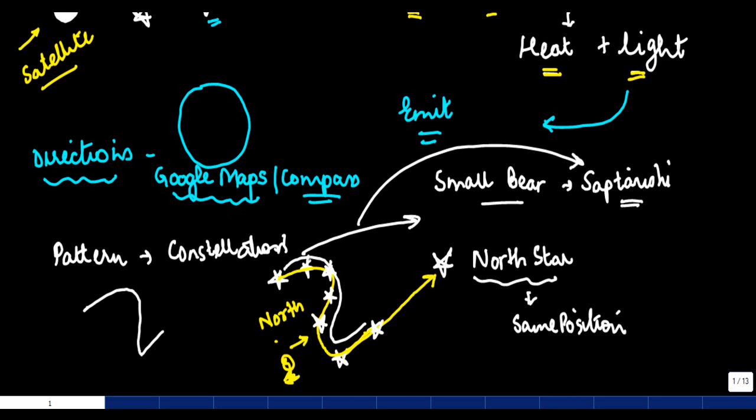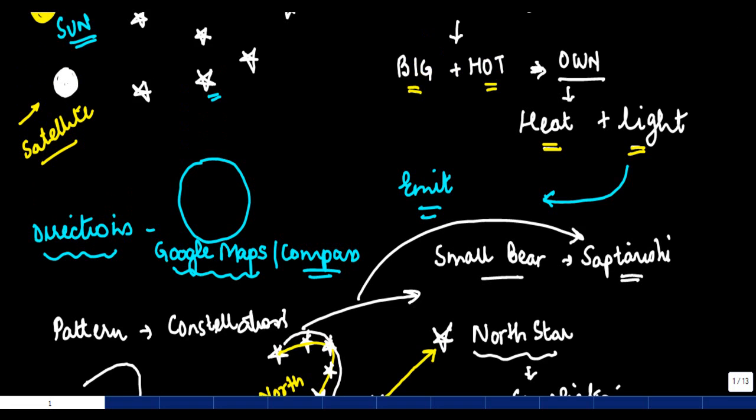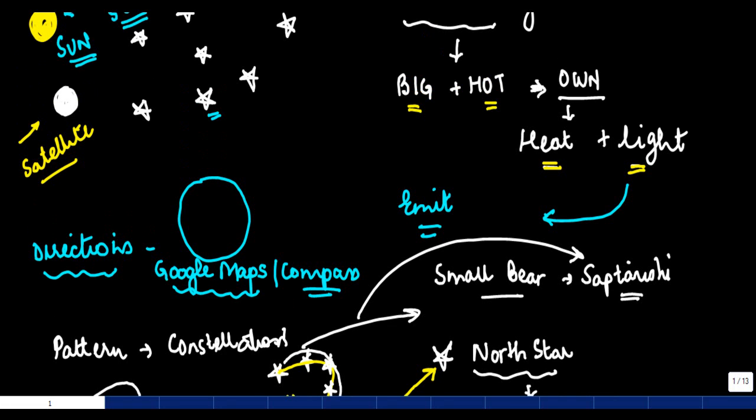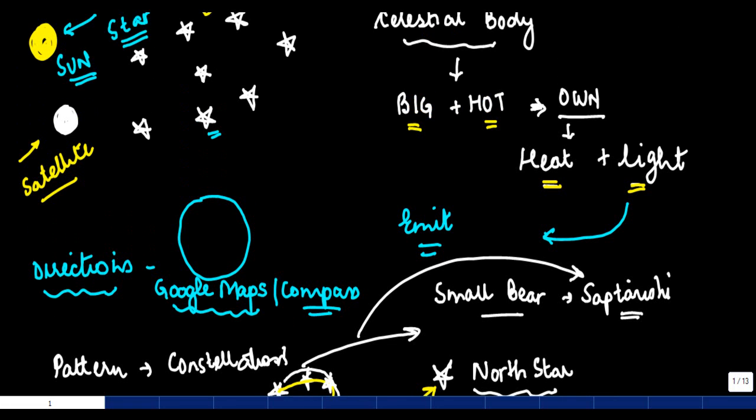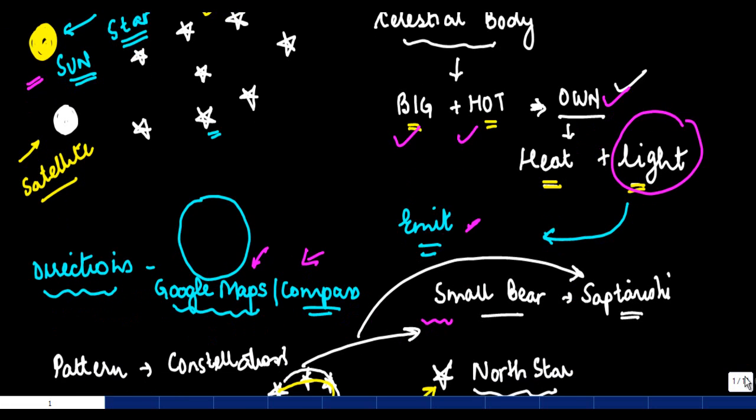And the Small Bear or the Saptarishi in Hindi is one of such famous constellations. Couple of interesting things about stars you want to quickly recapitulate. The stars have Sun as one of the stars. They are big, they're hot, they have light and heat of their own. They emit a lot of light and the coolest example of this is Sun. They were used to identify directions in ancient times when Google Maps and compasses were not there. And whenever they form a pattern, that pattern is known as constellations.